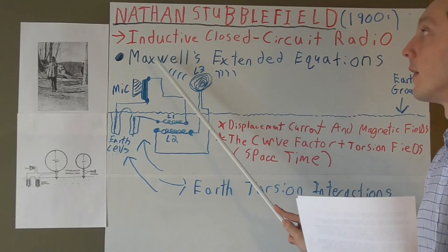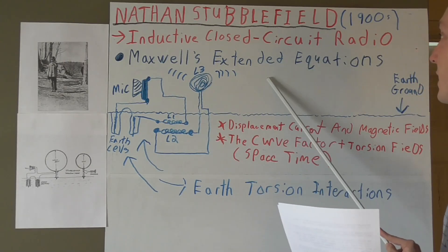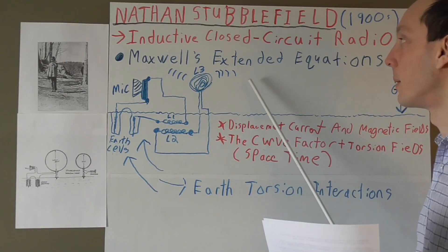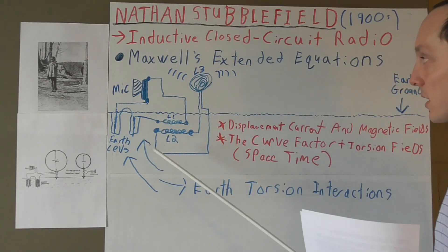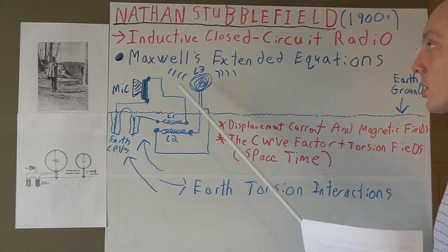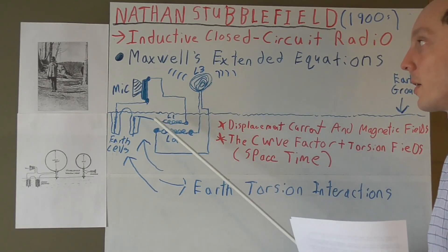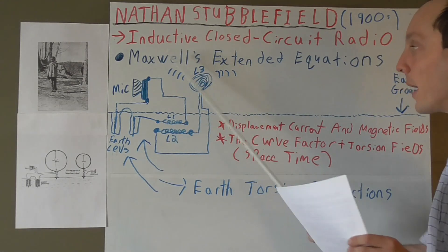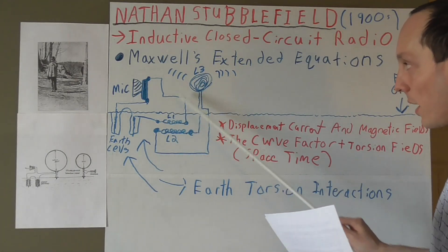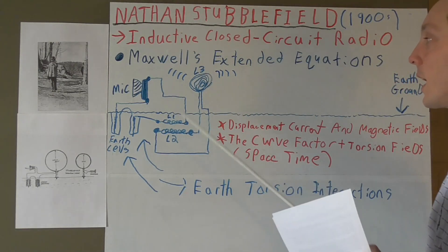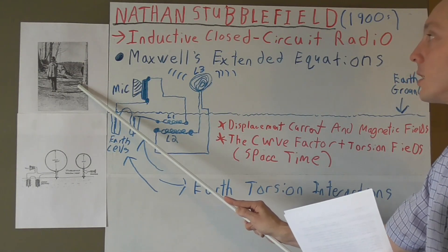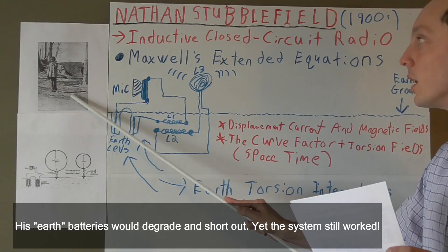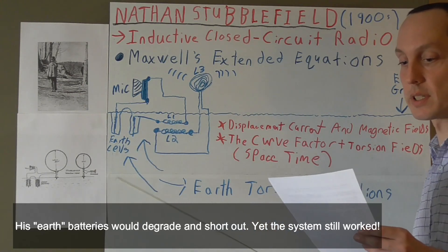There was something in the system that Stubblefield understood, and Tesla understood, but for some reason couldn't tell the world. Taking into the equation Maxwell's extended equations, which I talk about deeply in my book, I was able to design a better circuit that actually demonstrates how this system would actually work. Let me explain my logic for how I came up with this circuit, which would explain how Stubblefield was able to do what he did.